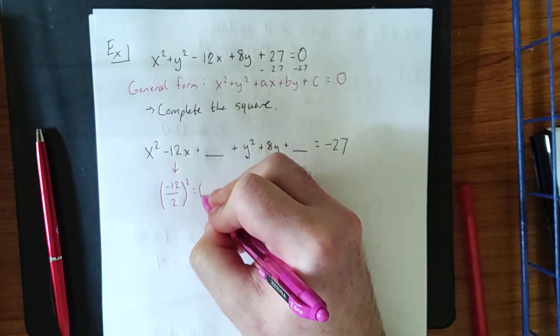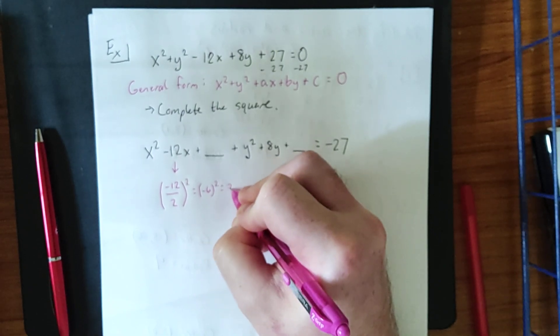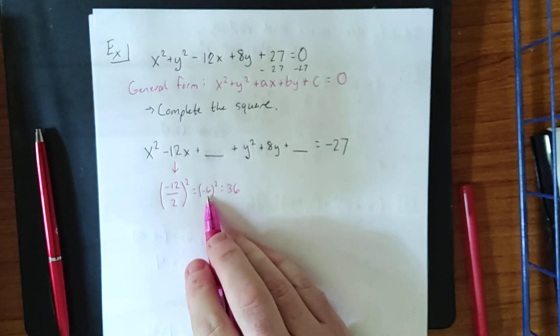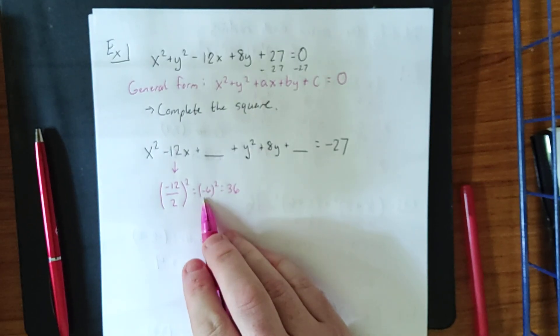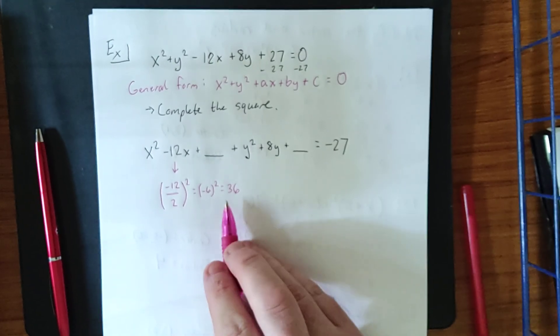Simplifying according to the order of operations, first we do our division by 2, and then we square the result. Note the use of parentheses here, because when we're squaring this negative number, we need to make sure that we know that this is negative 6 times negative 6, not 6 times 6, and then make it negative. We get 36.